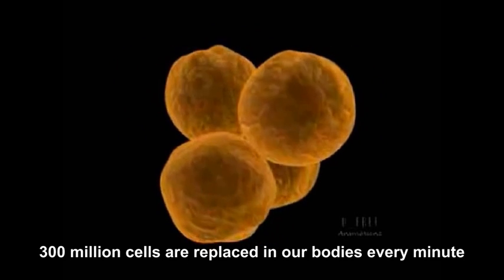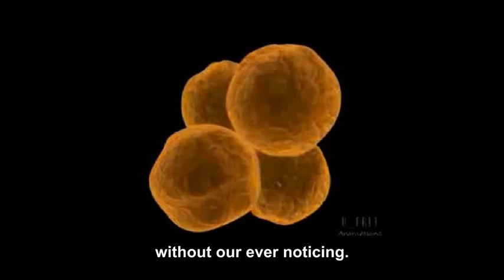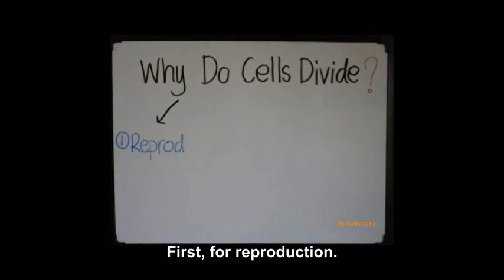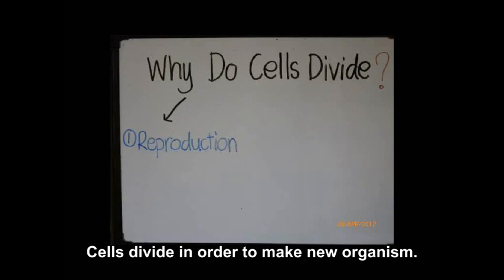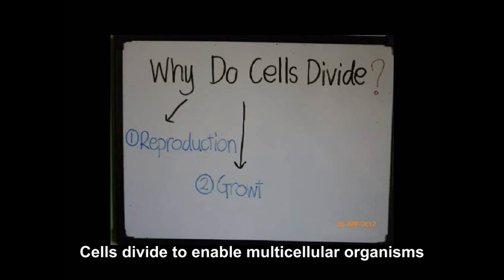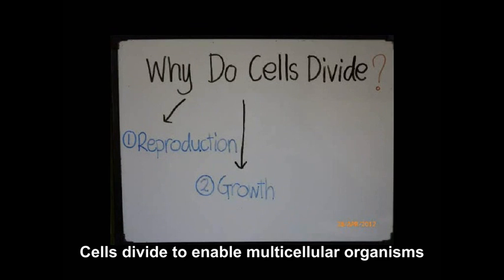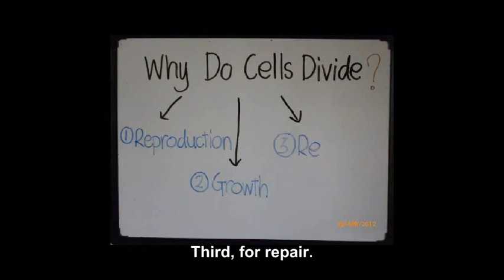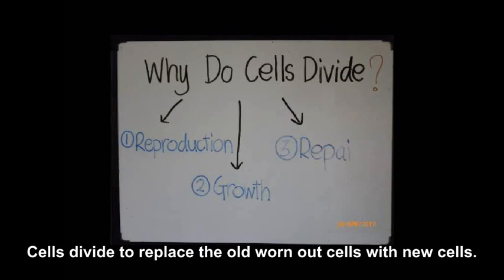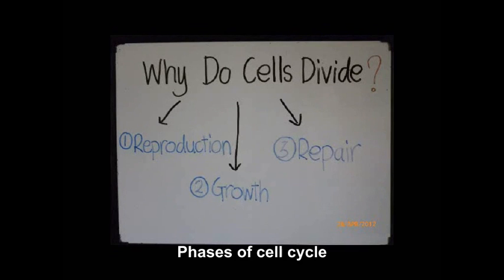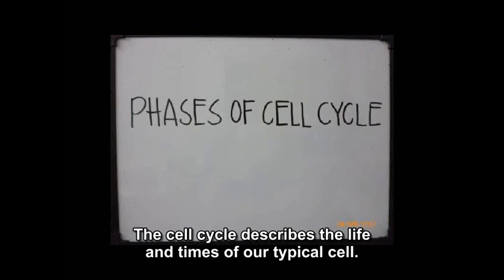Why do cells divide? First, for reproduction — cells divide in order to make new organisms. Second, for growth — cells divide to enable multicellular organisms to grow and develop from a single cell. Third, for repair — cells divide to replace old, worn-out cells with new cells.